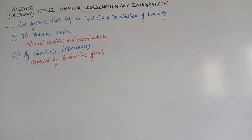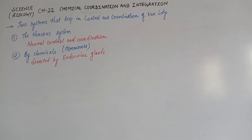Basically, there are two systems that help in control and coordination of our body — control and coordination between the muscles, organs, and glands. The first is the nervous system, and the second is by chemicals that are also known as hormones.